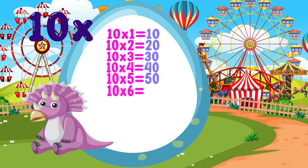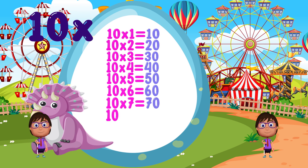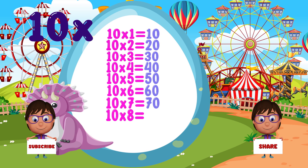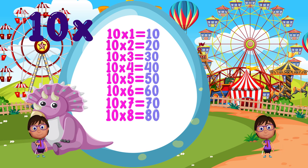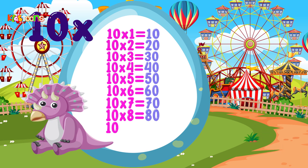10 times 6 is equal to 60. 10 times 7 is equal to 70. 10 times 8 is equal to 80. 10 times 9 is equal to 90. 10 times 10 is equal to 80. 10 times 10 is equal to 90.